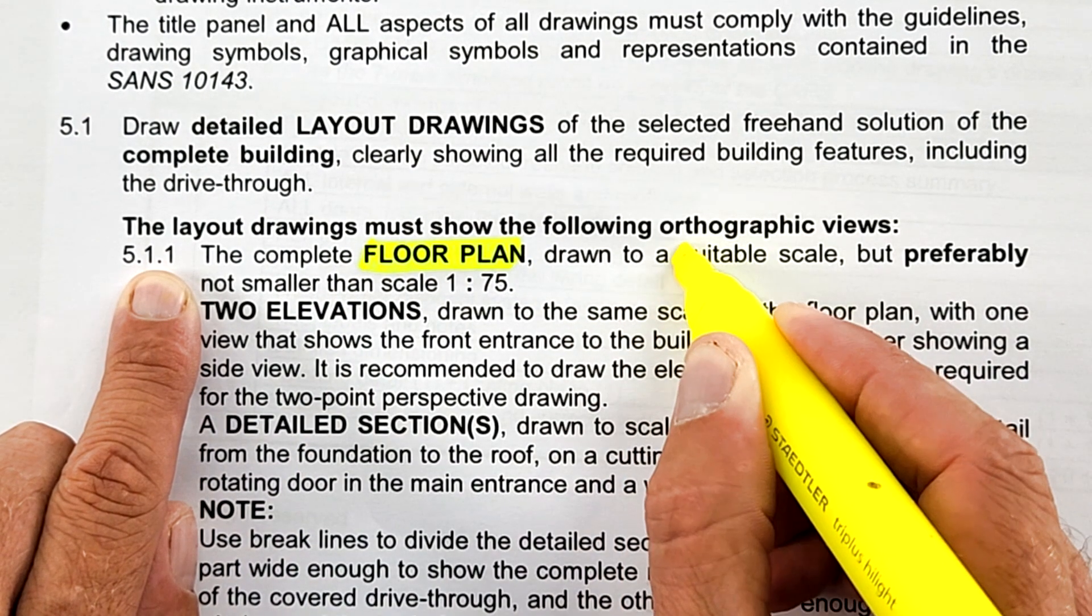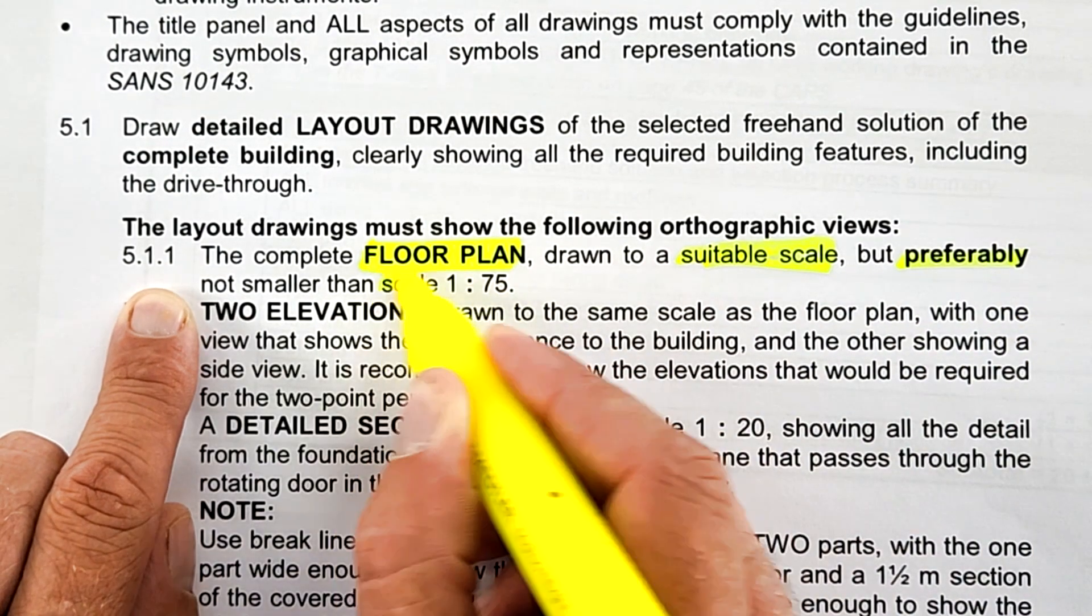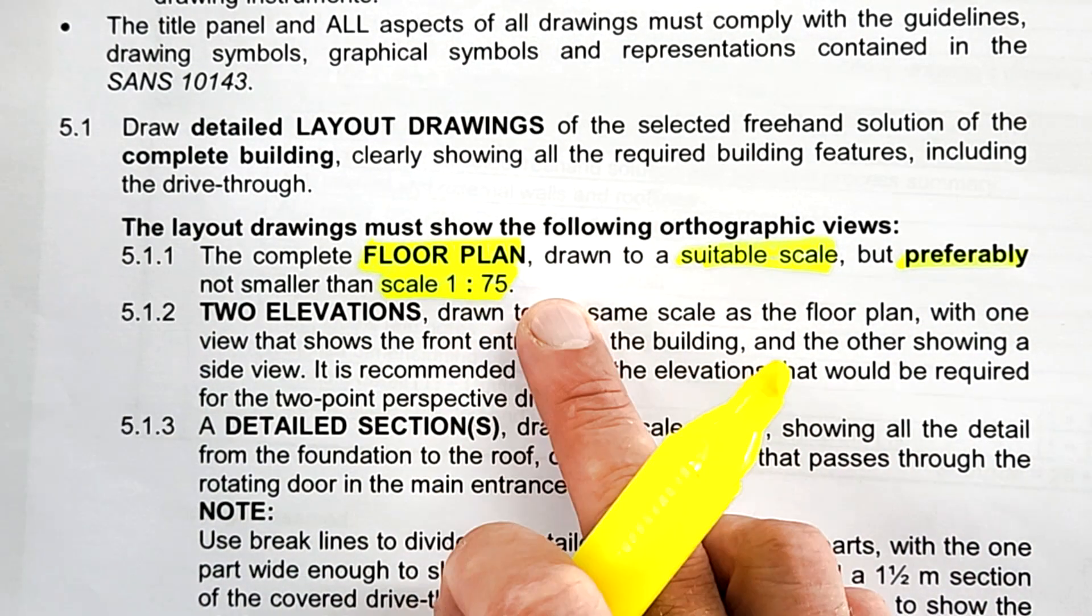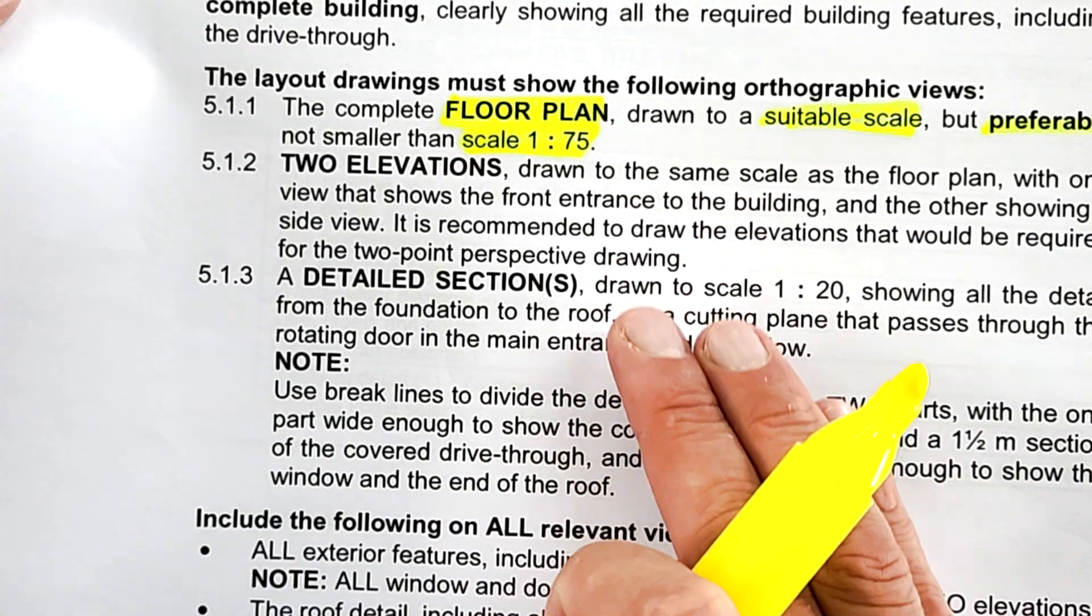That section talks about the requirements for the floor plan that must be drawn to a suitable scale, but preferably not smaller than scale 1 to 75.